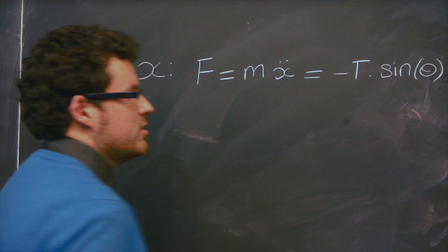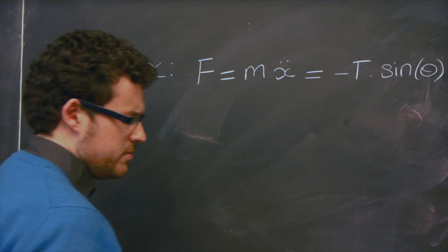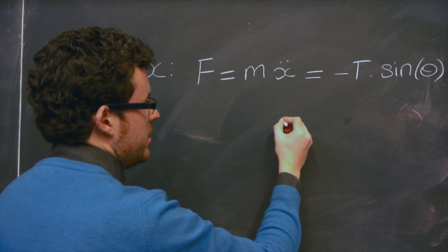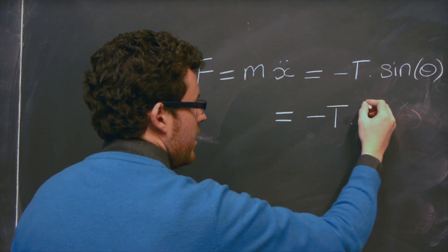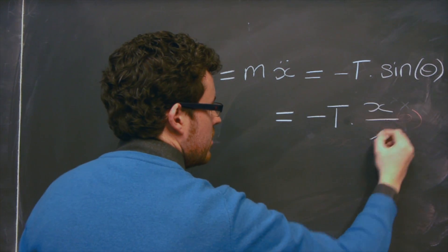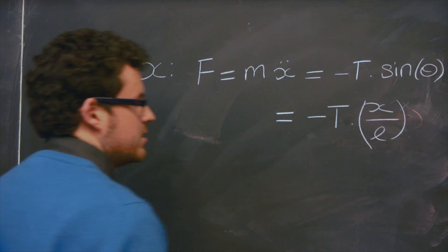tension T times the sine of theta. And this is a negative force because it's a restoring force. And that can be expressed as minus T times x over L, or L is the length of the string.